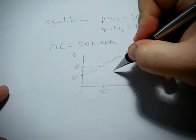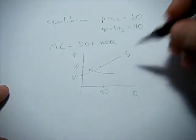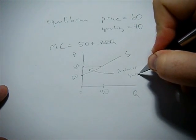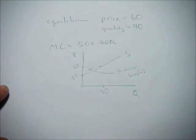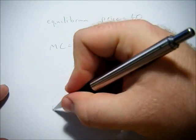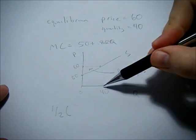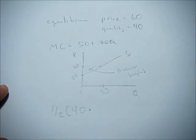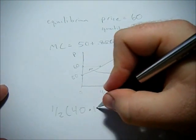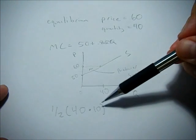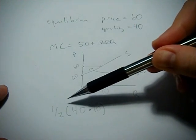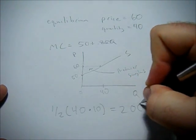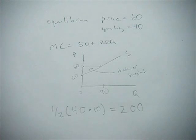And we know that producer surplus is the area below price, but above the supply curve. So in this example, it's going to be one-half base, which is 40, 40 minus 0, times height, which is 60 minus 50, or 10. So it's going to give us 400 divided by 2, which is going to be 200. So our producer surplus in this example is 200.